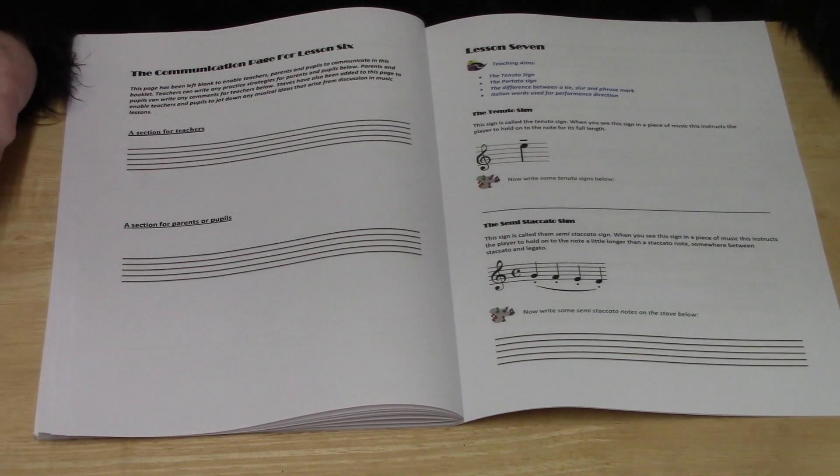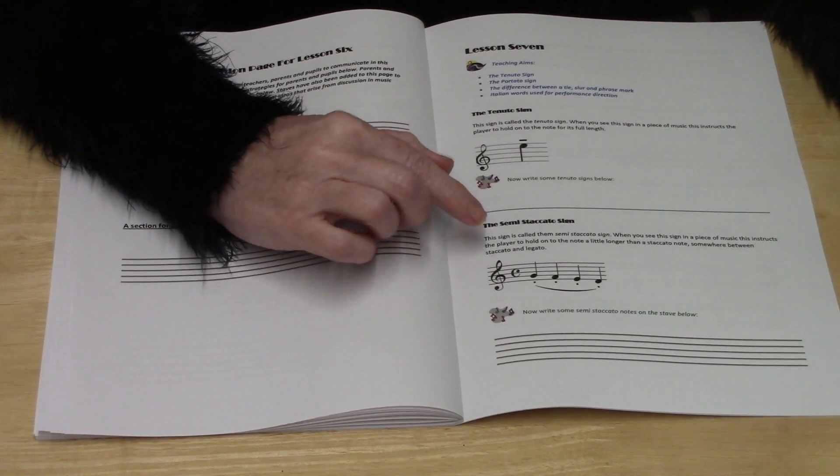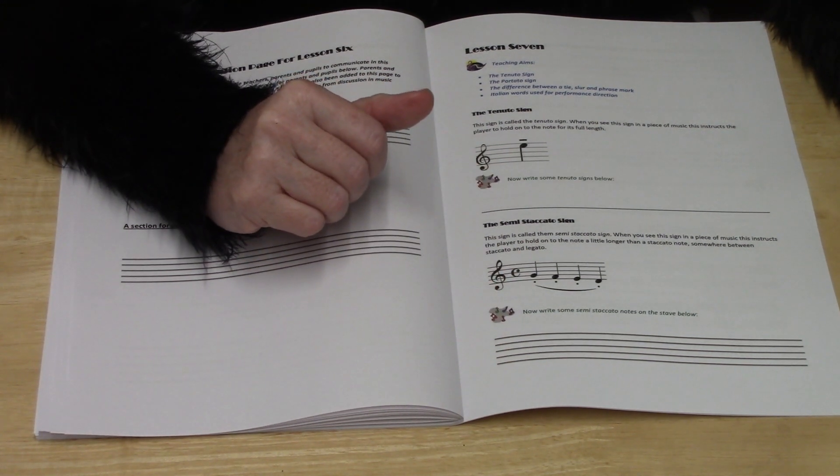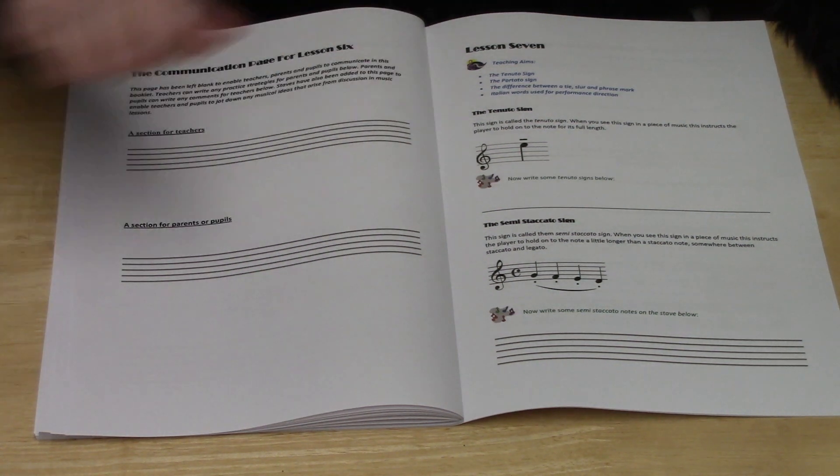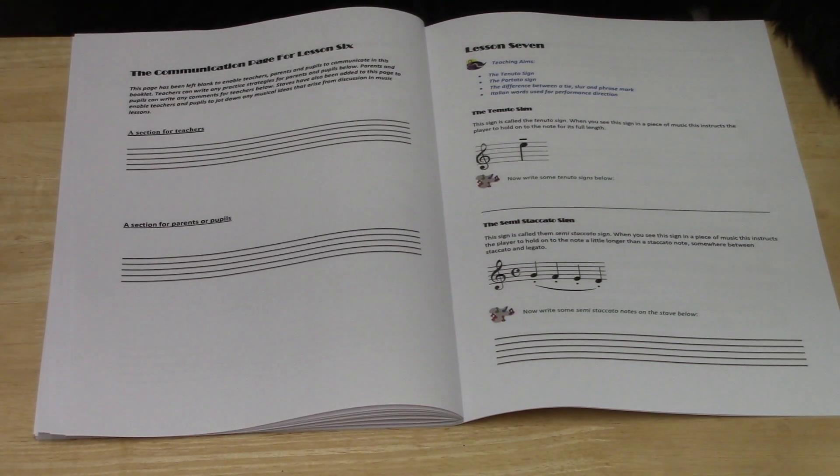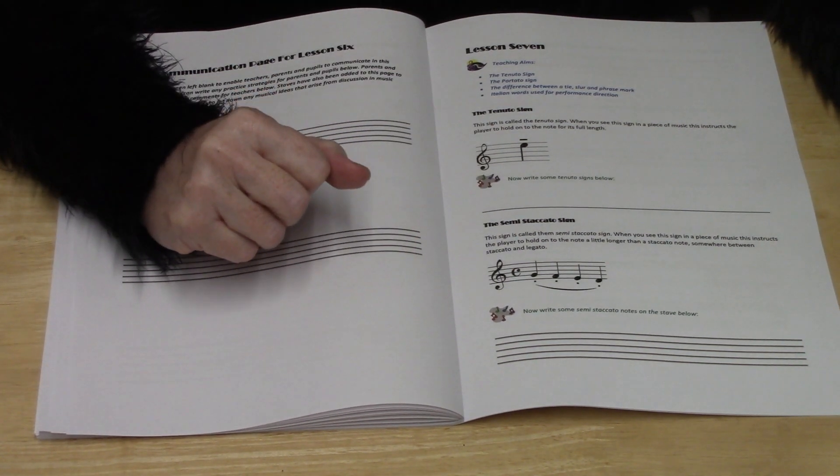Then we go on to something called the portato or the semi-staccato sign. This comes up a lot in violin music because when you bow you use one complete bow, which gives you the opportunity to use the same bow over four notes. So violinists know this term very well.